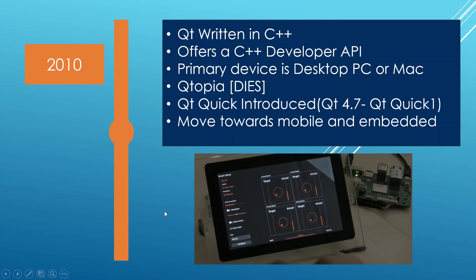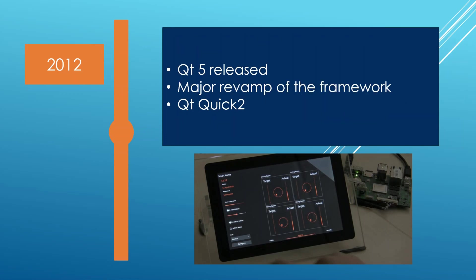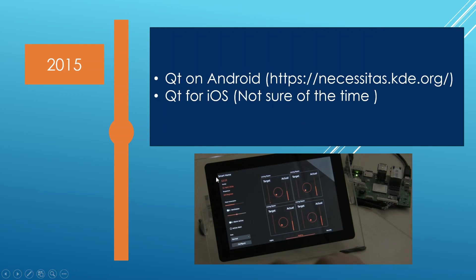You can see an example here — some embedded device probably running on Raspberry Pi. You can do things like this in Qt Quick today. Qt 5, the current version at the time of recording, was released in 2012 and was a major revamp of the Qt framework, introducing many new things including Qt Quick 2, which brought many improvements to the Qt Quick technology.